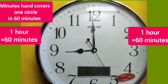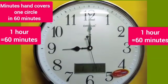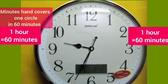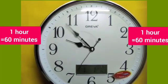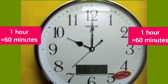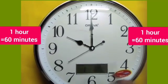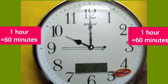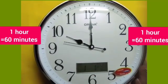Now, again, this minute hand is moving and completing the one circle of this clock. Notice, this shortest hour hand moves from 9 to 10 in 60 minutes. It shows 1 hour is equal to 60 minutes.